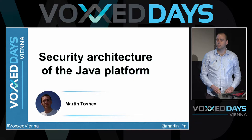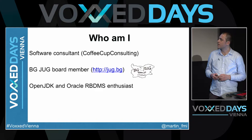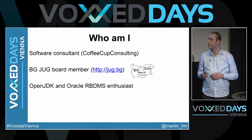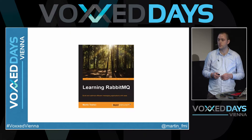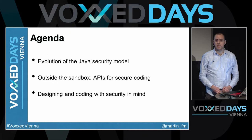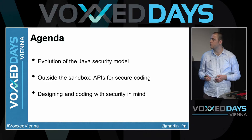A few short words about me. My name is Martin. I'm currently a consultant working through my own company called Coffee Cup Consulting. I'm also one of the guys who organizes the events of the Bulgarian Java User Group. I'm also a big OpenJDK and Oracle enthusiast. Recently I also wrote a book on RabbitMQ. During this talk, we'll first discuss the security architecture of the Java platform as it is today, then an overview of the different security APIs provided by the JDK, and finally best practices specific to the Java technology stack.